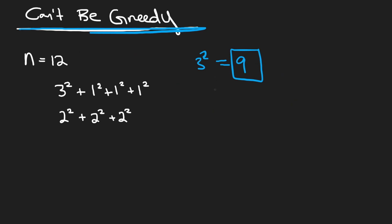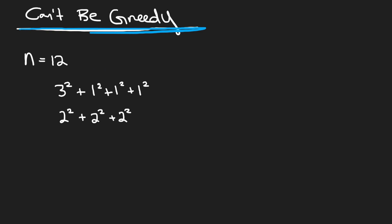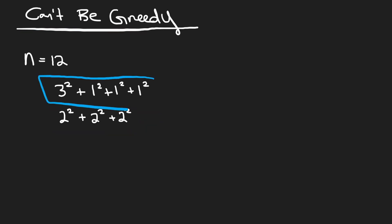Now we try 2 squared which is 4, but 4 plus 9 is 13 — we went too far, we're trying to get 12. If we started being greedy with 3 squared, then we'd need three 1 squareds to reach 12, giving us 4 total squares. But if we're not greedy and start with 2 squared (4 + 4 + 4), we get 12 in just 3 perfect squares. So this is not a greedy problem.